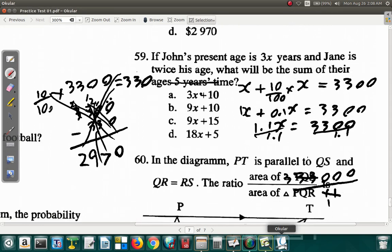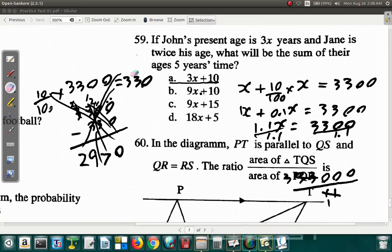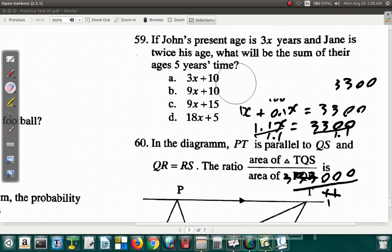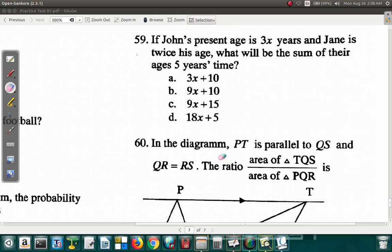Let's look at question 59. If John's present age is 3x years, John is now 3x years, and Jane is twice his age. So Jane is 2 times 3x. What will be the sum of their ages in 5 years' time? So in 5 years, John will be 3x plus 5. In 5 years, Jane would be 2 times 3x plus 5. And you want the sum of their ages.